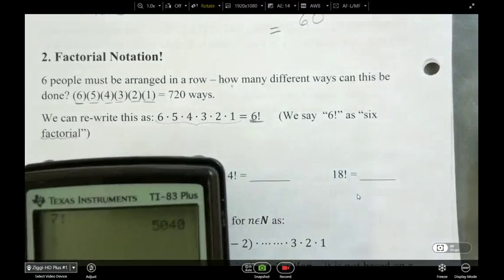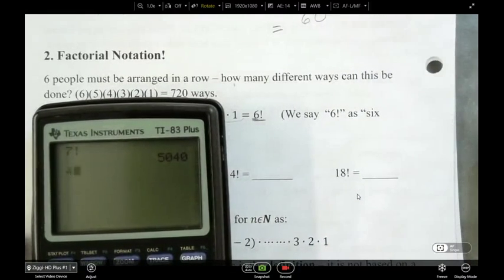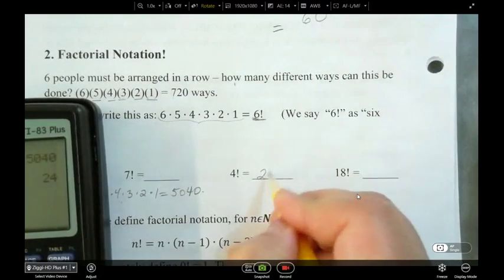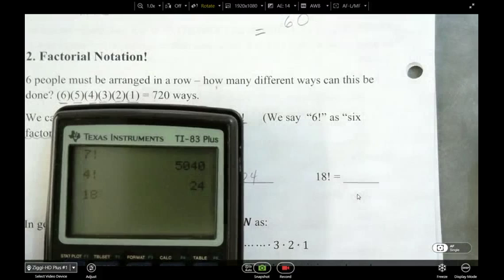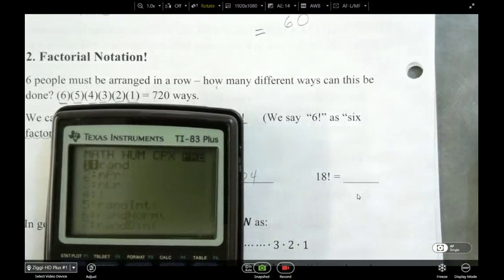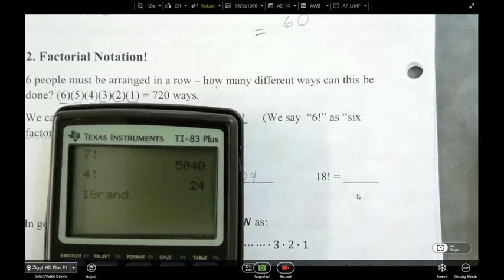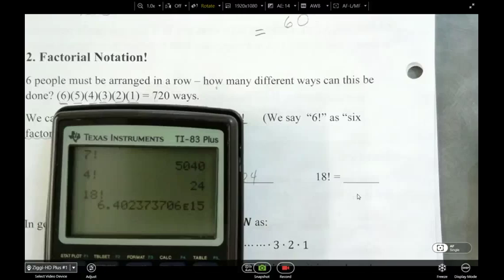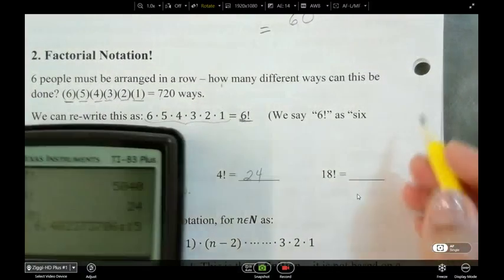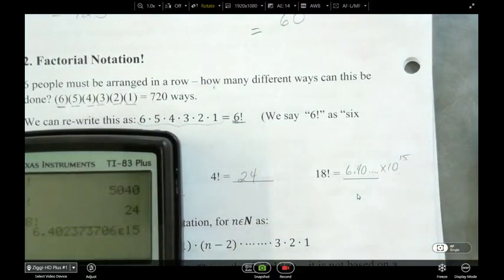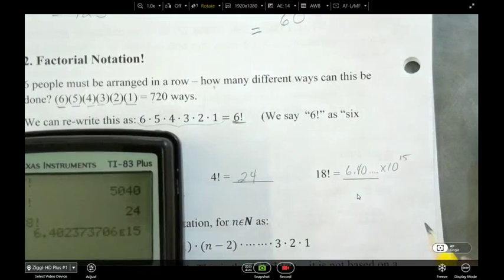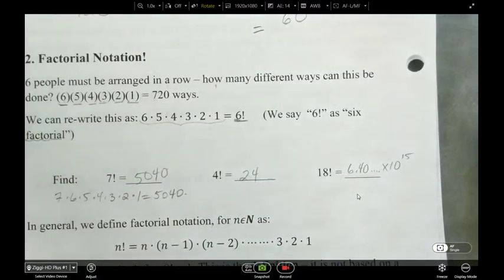So that's a much quicker way to figure it out. So 4 factorial is 24. And 18 factorial, it's ginormous, right? So it's 6.40 times 10 to the 15. It's 18 times 17 times 16 times 15, all the way down to 1.